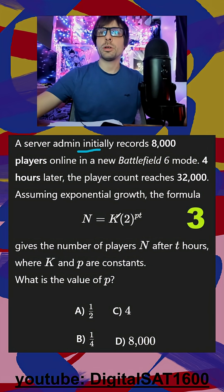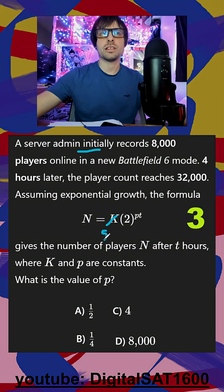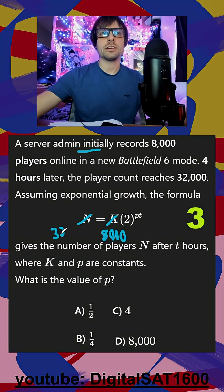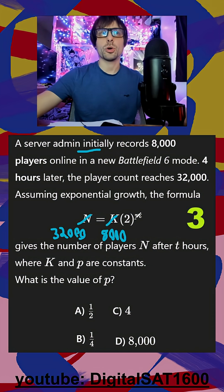We want to be really comfortable with our exponential functions. Remember that k is our initial, so that's just going to be our 8,000 start. n is your result, that's going to be 32,000. They also gave us t is 4, so we'll say it's being raised to the 4p.